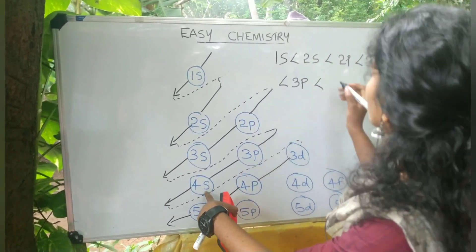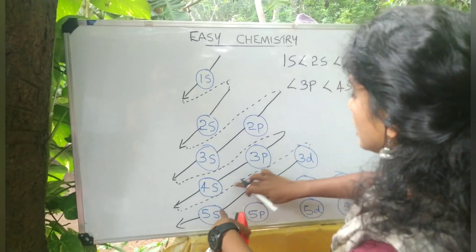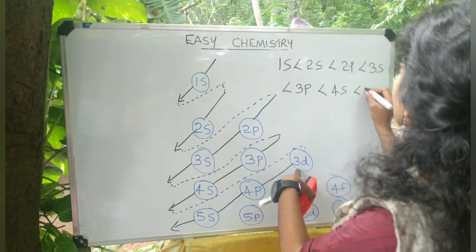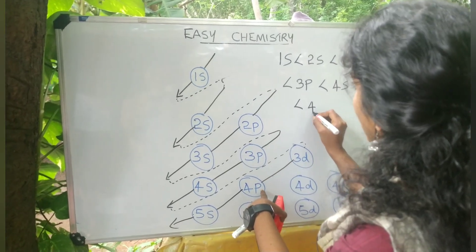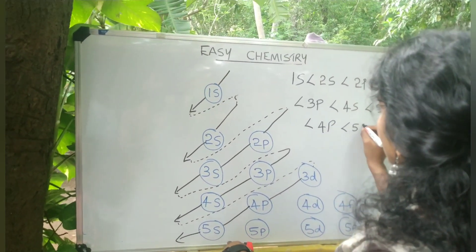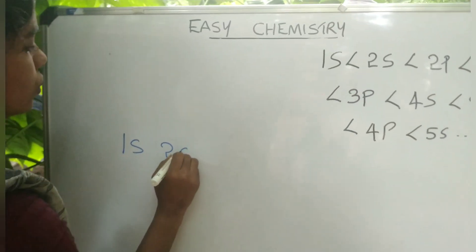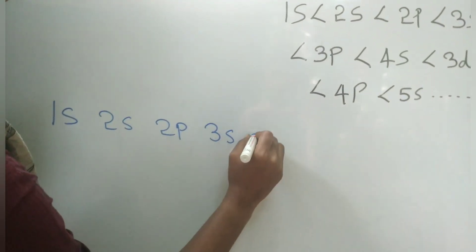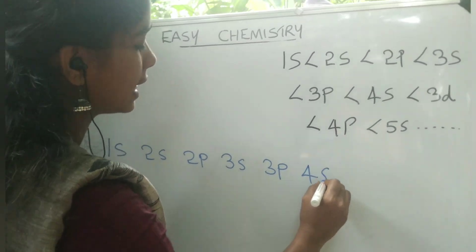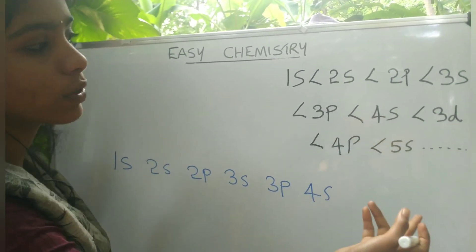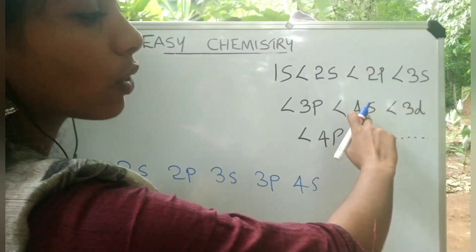Continuing the energy order: 3p is less than 4s, 4s is less than 3d, 3d is less than 4p, 4p is less than 5s. So the full energy order so far is: 1s, 2s, 2p, 3s, 3p, 4s, 3d, 4p, 5s.